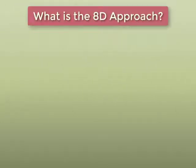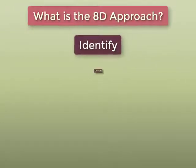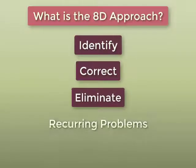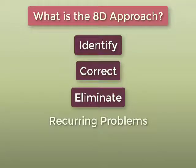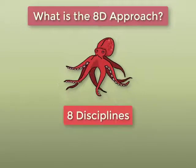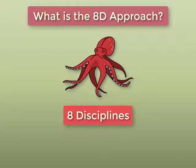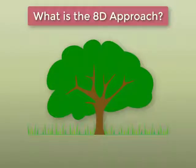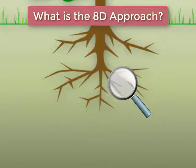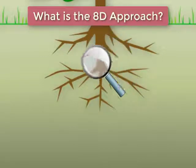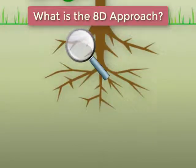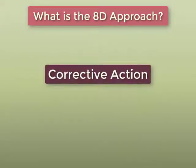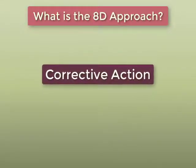The 8D approach is used to help identify, correct, and eliminate recurring problems. The methodology is very systematic in that it uses eight steps or disciplines to make sure that a team can identify their true root causes. It is a very structured approach to enabling teams to identify the root cause or root causes which helps the team then to take appropriate corrective action to prevent those problems from reoccurring.